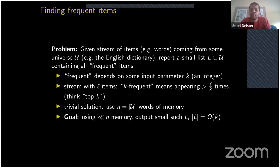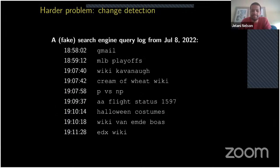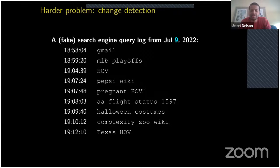When queried, output a small list L with no false negatives — anyone who is k-frequent must appear in L — but L may have a bounded number of false positives, so its size should be bounded. A harder problem is change detection: given a search query stream from yesterday and one from today, you want to notice changes in trends. For example, 'wiki' is always popular, but on July 9th many more people suddenly started searching for 'HOV'.